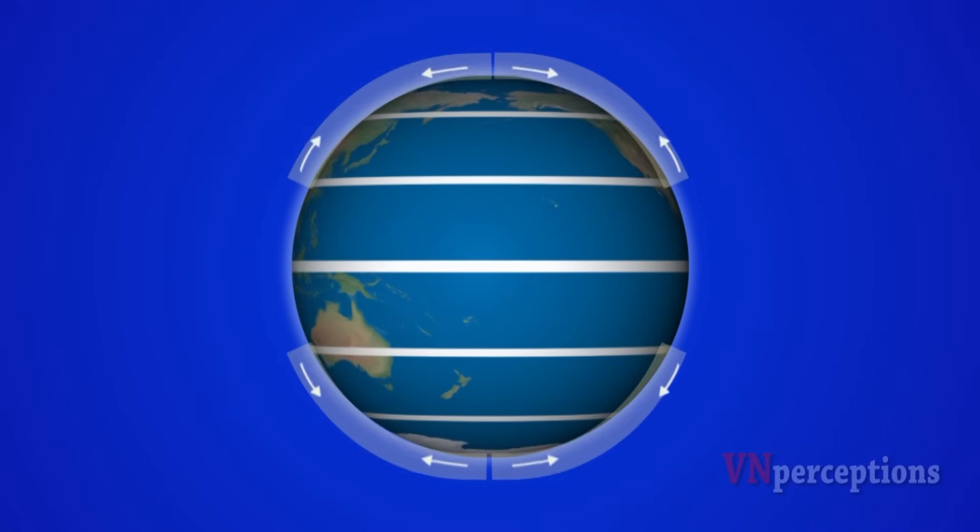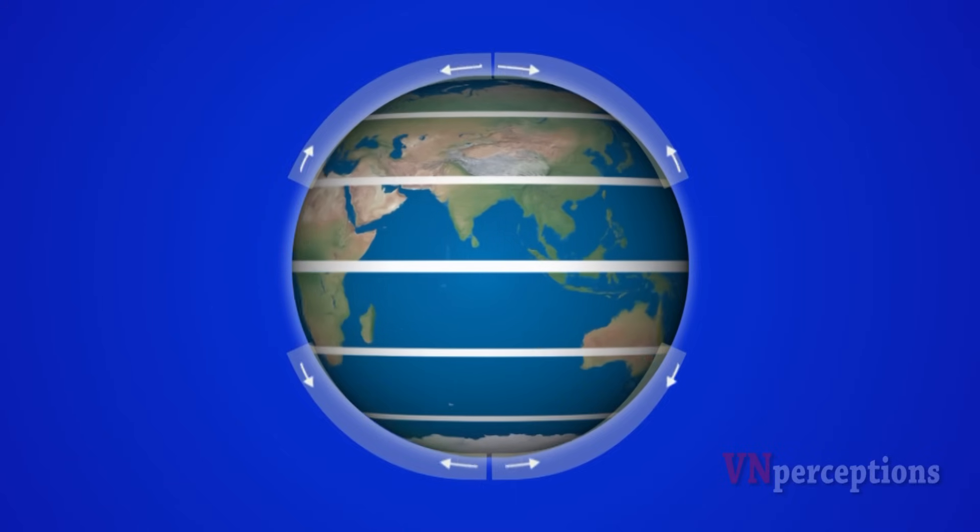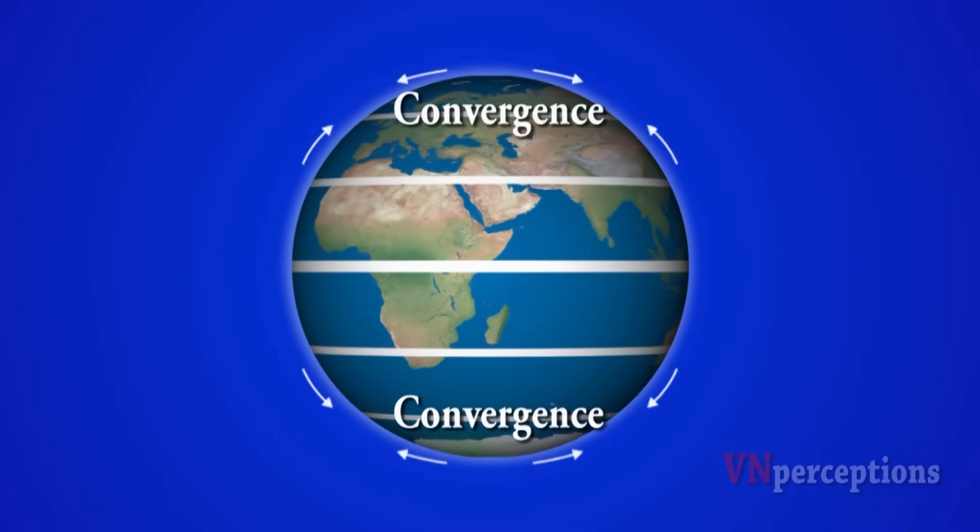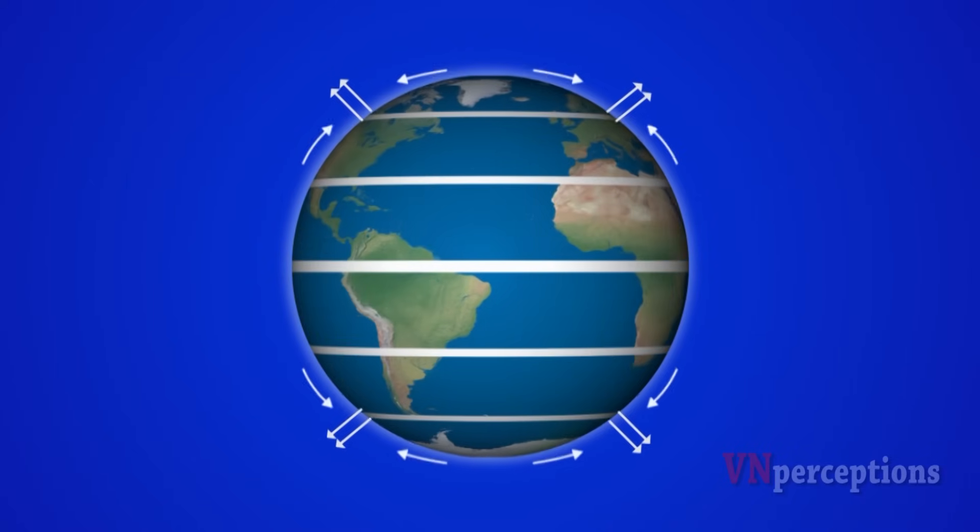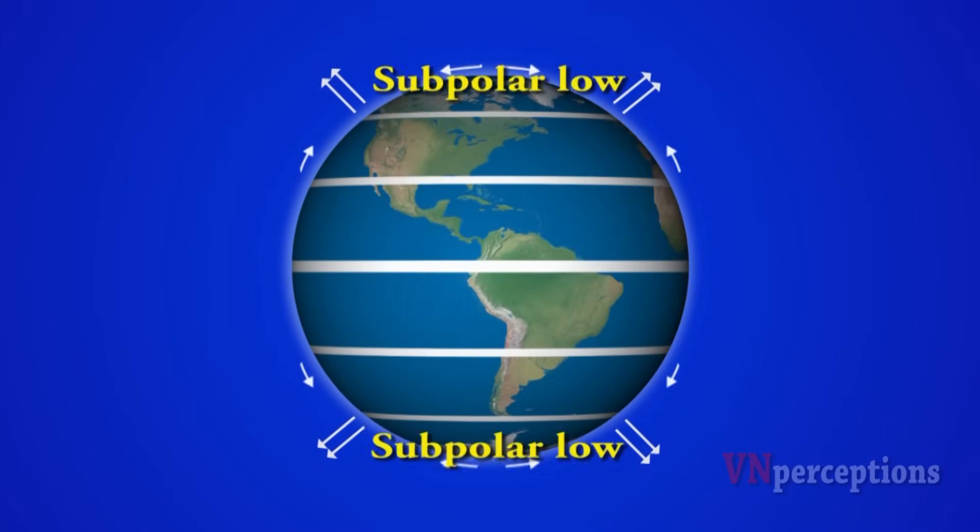At this point we have air coming from north and south. So at this point the air converges and rises up. These regions are known as subpolar lows. At 60 degree latitudes we have low pressure system because we have rising air.